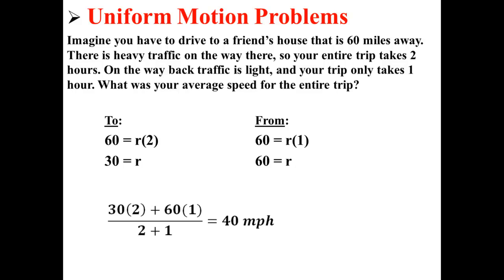Now we need to compute a weighted average to find out the average speed for your entire trip. You traveled at 30 miles per hour for two hours, and 60 miles per hour for one hour. So we divide your speeds by your time, or we divide 120 by three, and we find that your average speed for the entire trip was 40 miles per hour.